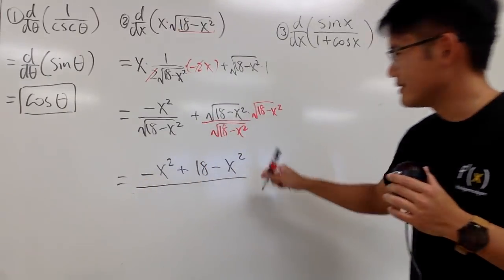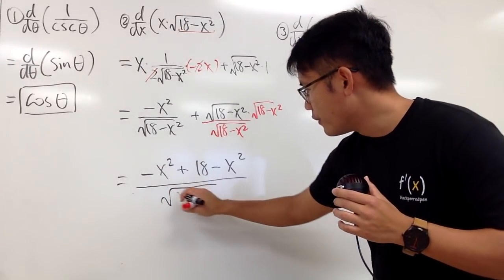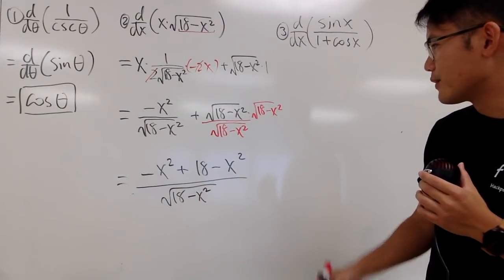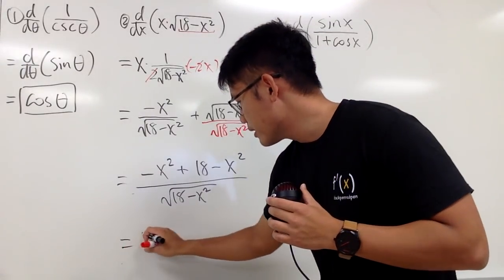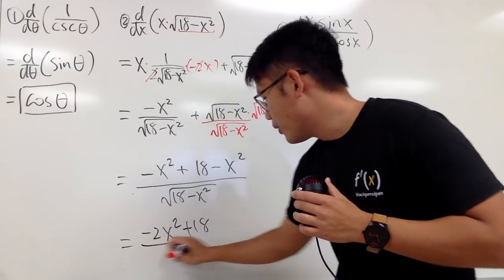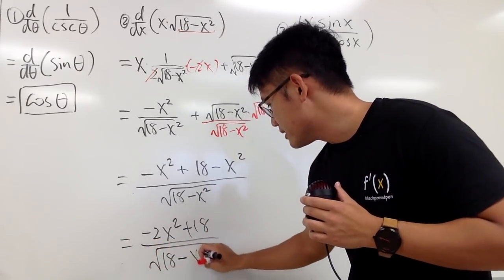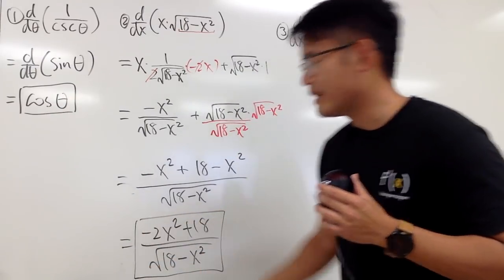and then this is all over. This is for the denominator. Square root of 18 minus x squared. And, of course, you can notice, this and that together, you just get minus 2x squared, and then plus 18, all over that, namely, square root of 18 minus x squared. And, with that, we are done.